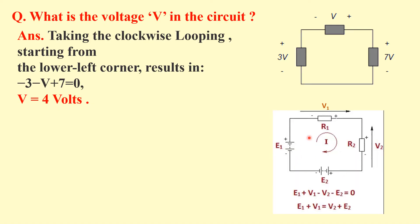Similarly, in another loop: E1 goes from negative to positive, V1 goes from negative to positive, and V2 is negative, and E2 is also negative with a plus-to-minus orientation. So the KVL equation gives: E1 plus V1 minus V2 minus E2 equals zero, or equivalently, E1 plus V1 equals V2 plus E2. This demonstrates how Kirchhoff's voltage law is applied in a loop.